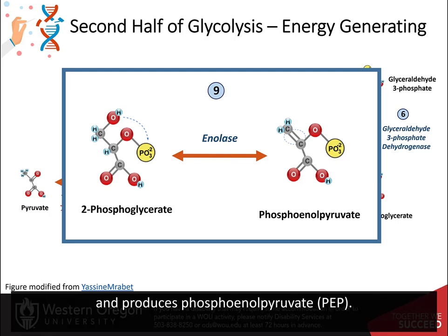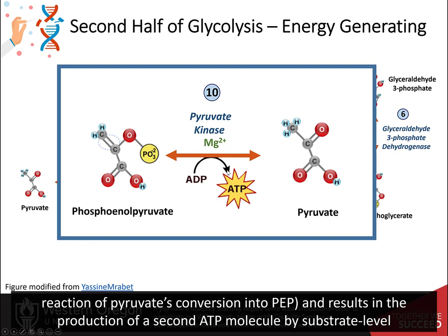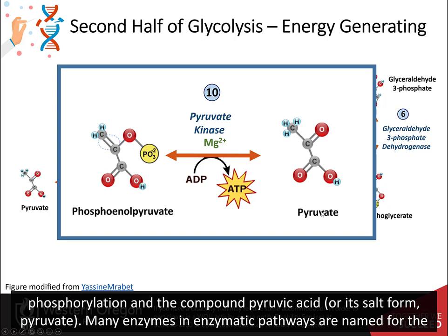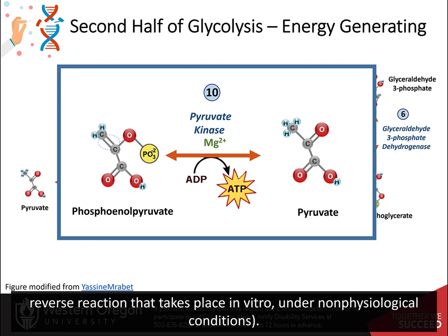Step ten. The last step in glycolysis is catalyzed by the enzyme pyruvate kinase. The enzyme is named for the reverse reaction of pyruvate's conversion into PEP, and results in the production of a second ATP molecule by substrate-level phosphorylation and the compound pyruvic acid, or its salt form, pyruvate. Many enzymes in enzymatic pathways are named for the reverse reactions, since the enzyme can catalyze both the forward and the reverse reactions. These may have been described initially by reverse reactions that take place in vitro under non-physiological conditions.